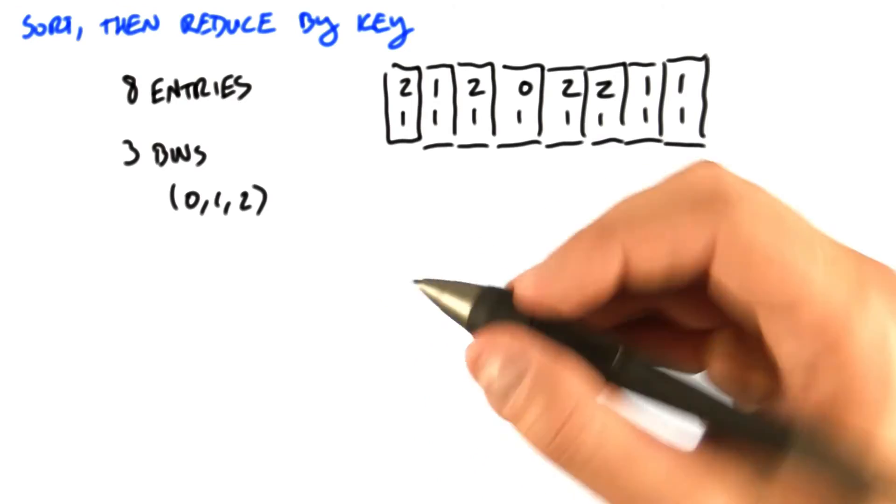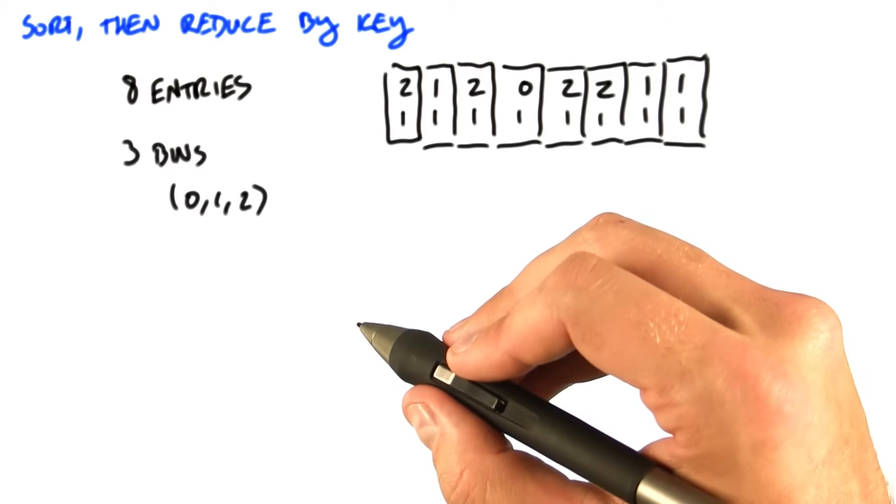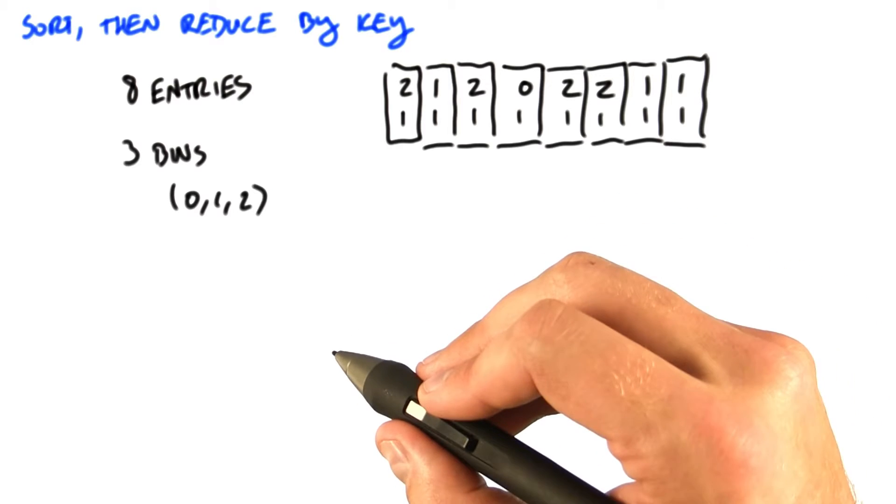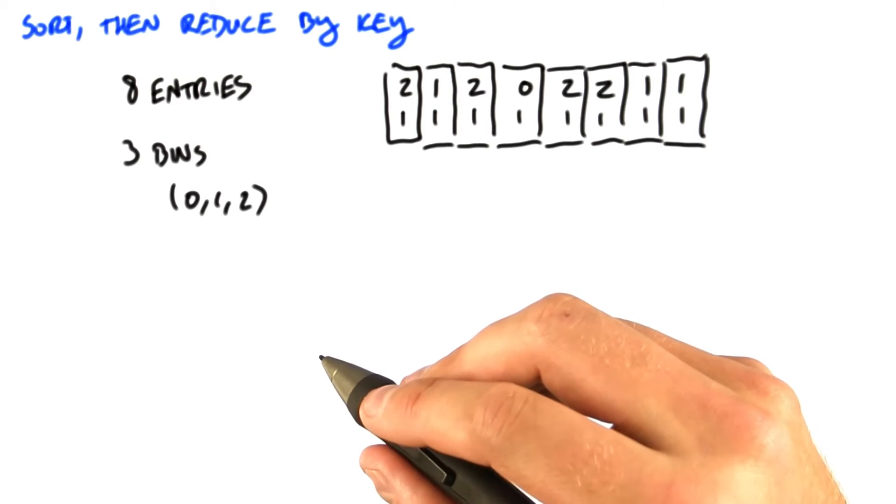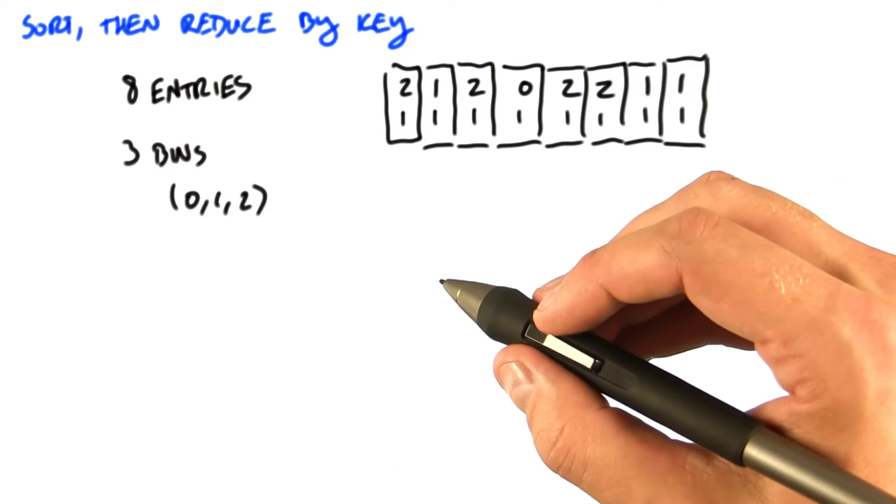The final algorithm we'll discuss, which we're going to call sort then reduce by key, is one that I'll just sketch out primarily because we haven't discussed the underlying algorithms yet. We'll get to them in the next lecture. However, it'll be a great mental exercise for you to think about how you might implement this approach.